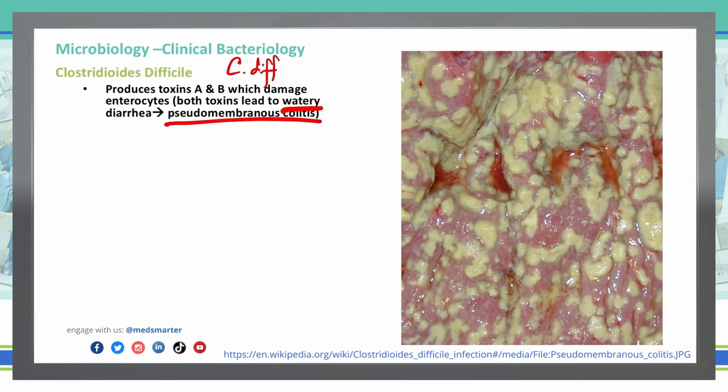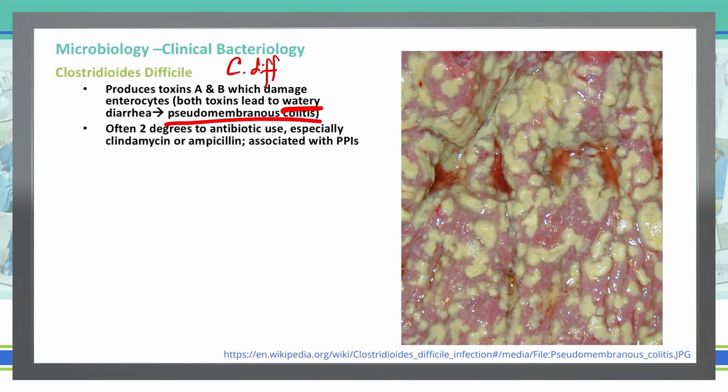Oftentimes, this is actually secondary to antibiotic use. We have Clostridium difficile in our bowels as part of normal flora; however, it is resistant to a lot of antibiotics. So when we use certain oral antibiotics that kill off a lot of our normal gut flora, it doesn't kill off C. diff, allowing it to flourish. Specifically, clindamycin and ampicillin can cause these issues with C. diff infections.